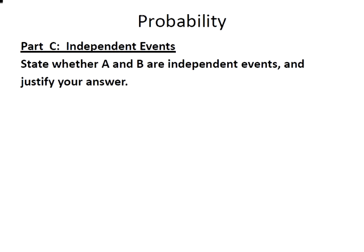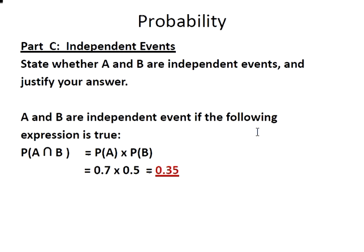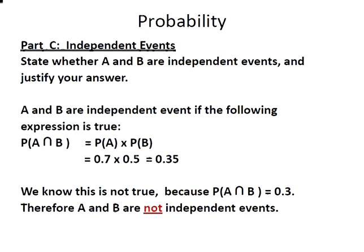Lastly, we have to state whether or not A and B are independent events, justifying our answer. A and B are independent events if P(A∩B) equals P(A) times P(B). Checking: 0.7 times 0.5 gives us 0.35. We know this is not true because we were told that P(A∩B) is 0.3, therefore A and B are not independent events.